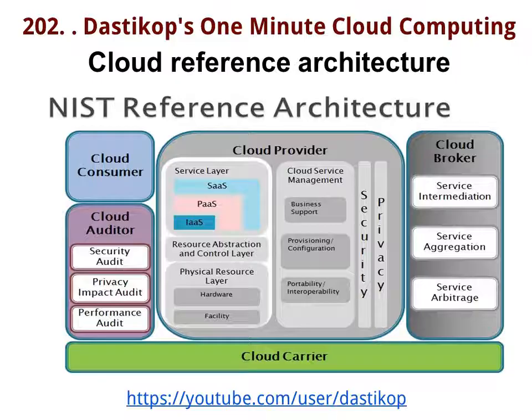At the bottom of this is the cloud carrier, who is actually the IT part — that means the networks and other internet provisions are given by them. So essentially, the cloud computing reference architecture given by NIST seems to be very broad, and it includes and identifies every single individual or agent who is participating in it.